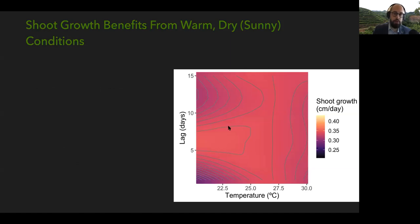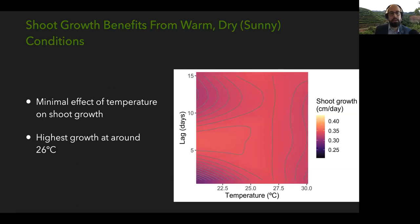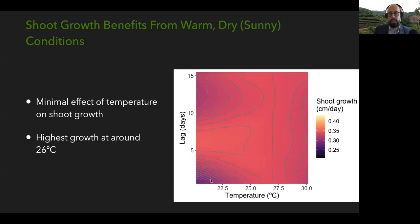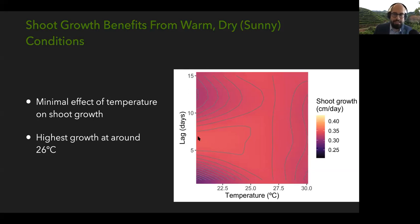Temperature had a less strong effect overall on shoot growth. The highest shoot growth was around 26–27 degrees Celsius, with slower growth at higher and lower temperatures, which is what we'd expect. There's also a minimal lag effect here — the strongest effect is from yesterday's weather. There appears to be some effect around 12 days ago, but that's likely an artifact.